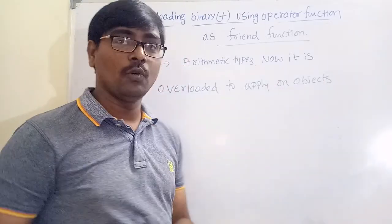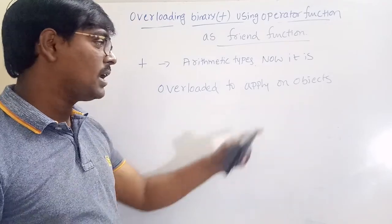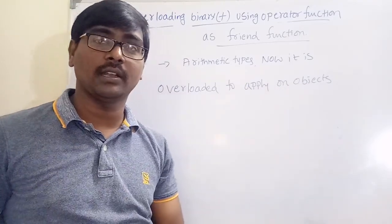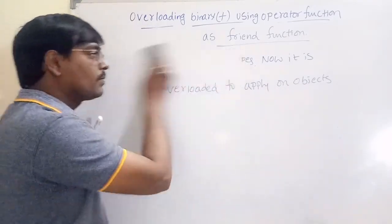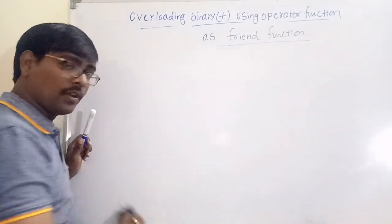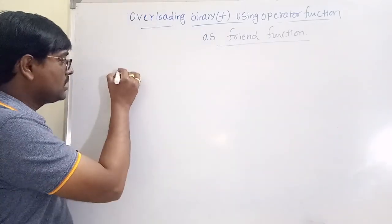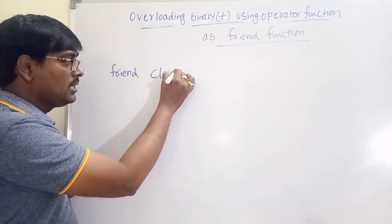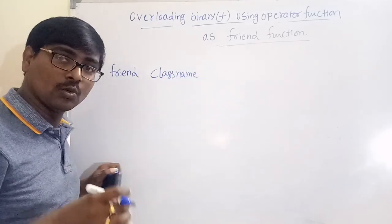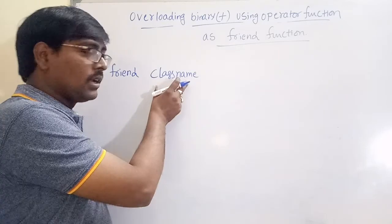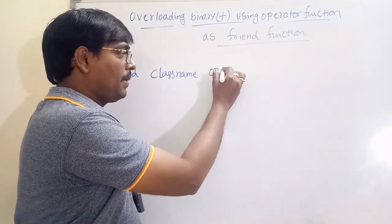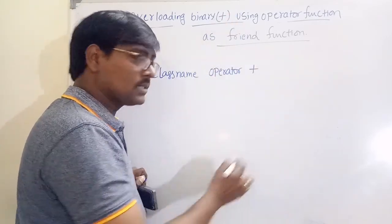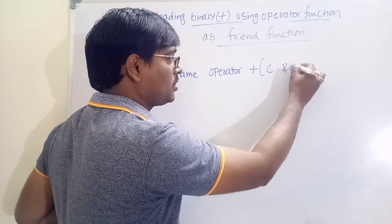The objects contain arithmetic types. Now, what is the syntax for creating an operator function as a friend function? Use the keyword 'friend' and the return type is an object — the function has to return one object, so the return type is the class name. 'operator' is the keyword, followed by the operator symbol, which is plus.